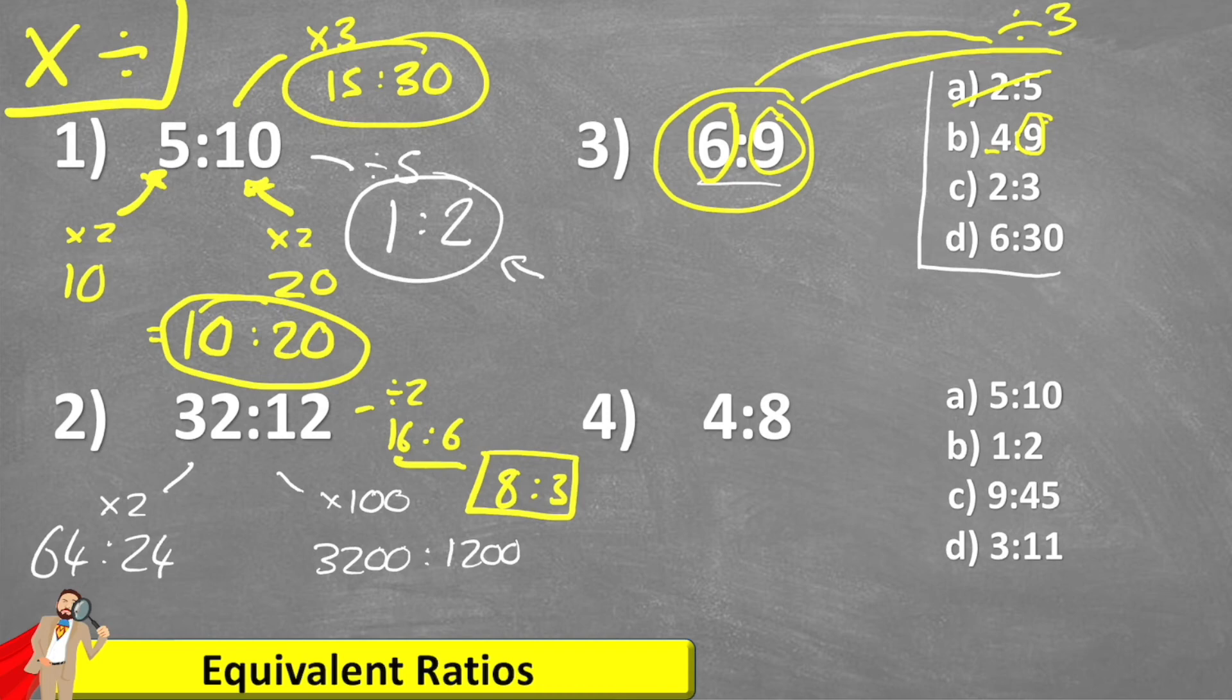2 to 3. Okay, this looks a bit promising. To get from six down to two, we would divide by three. And if we divided my nine by three, I would get three. So two to three is an equivalent ratio.